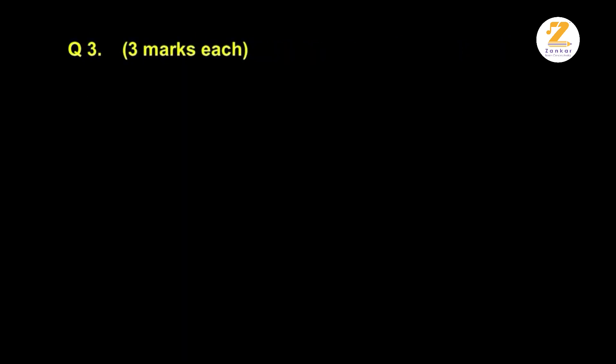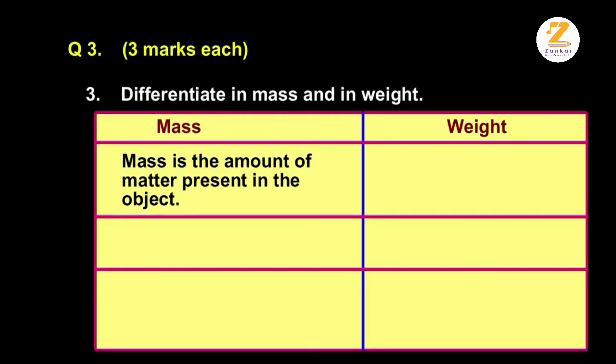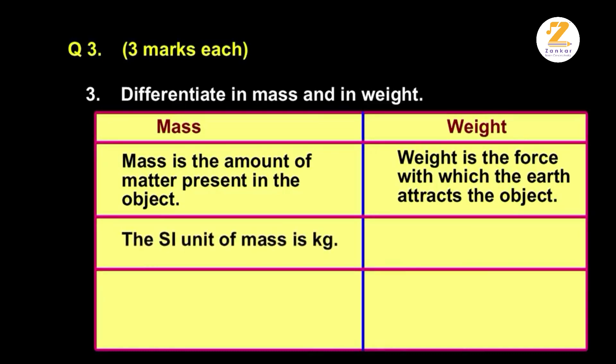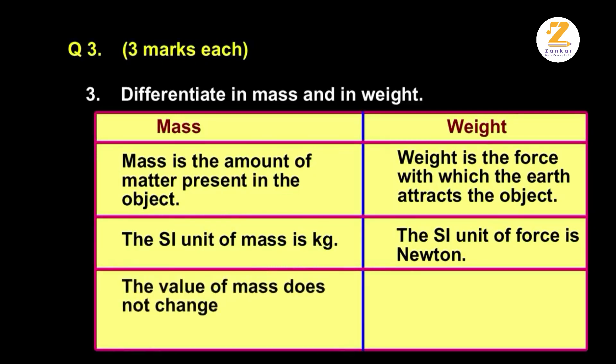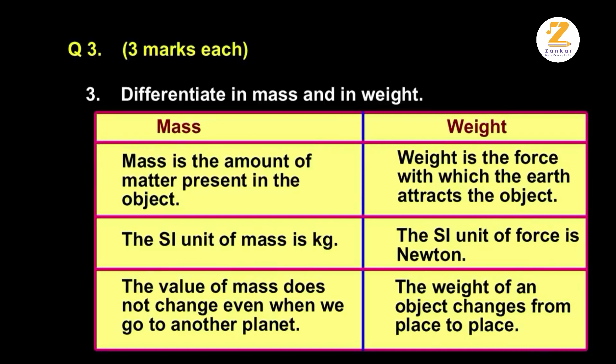Question 3, three marks each. Differentiate in mass and weight. Mass is the amount of matter present in the object. Weight is the force with which the earth attracts the object. The SI unit of mass is kg. The SI unit of force is Newton. The value of mass does not change even when we go to another planet. The weight of an object changes from place to place.